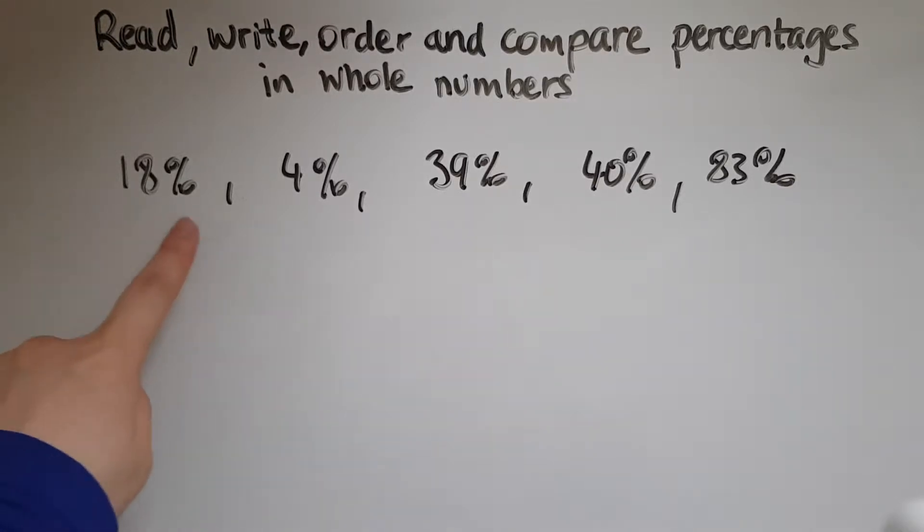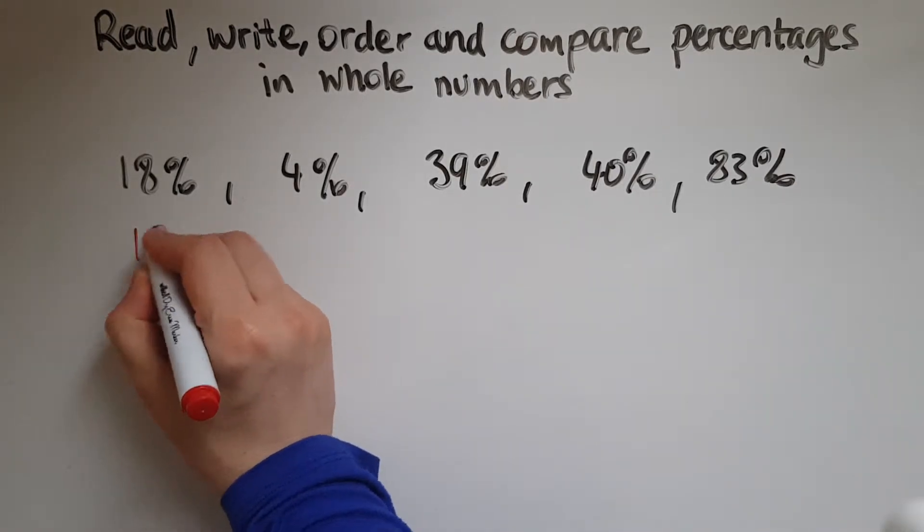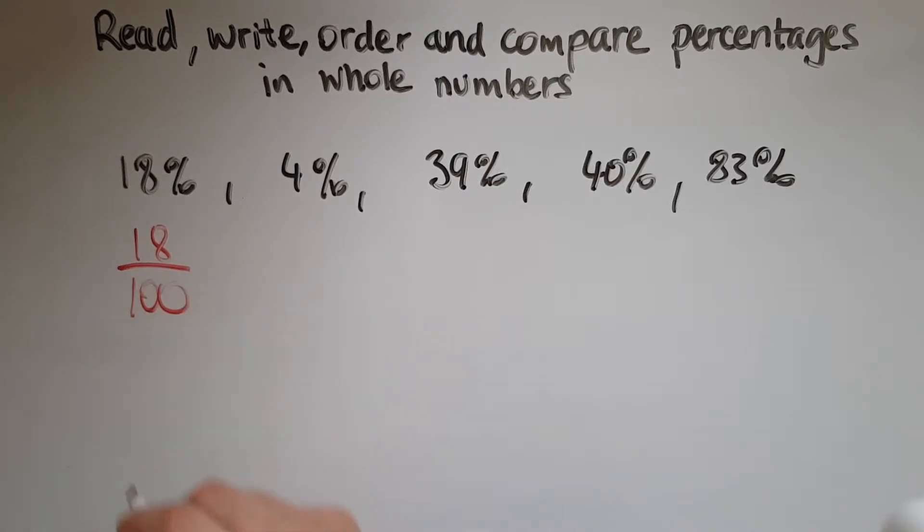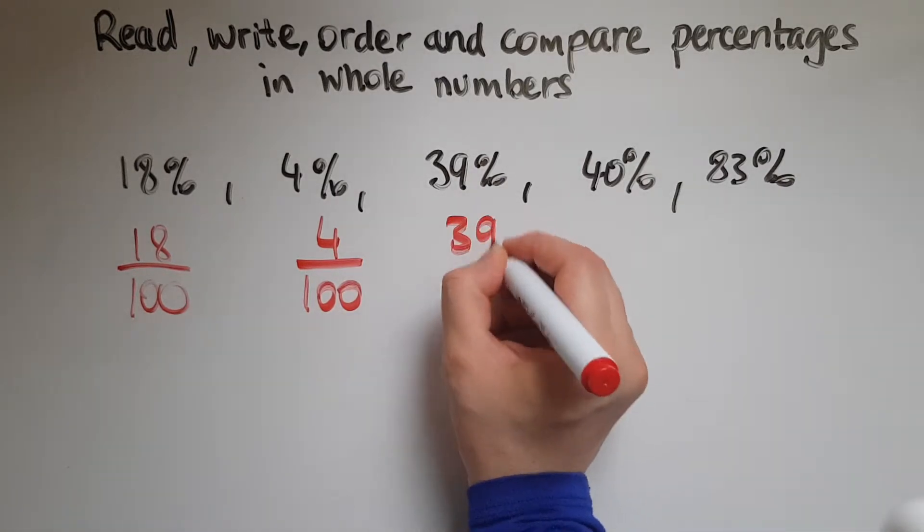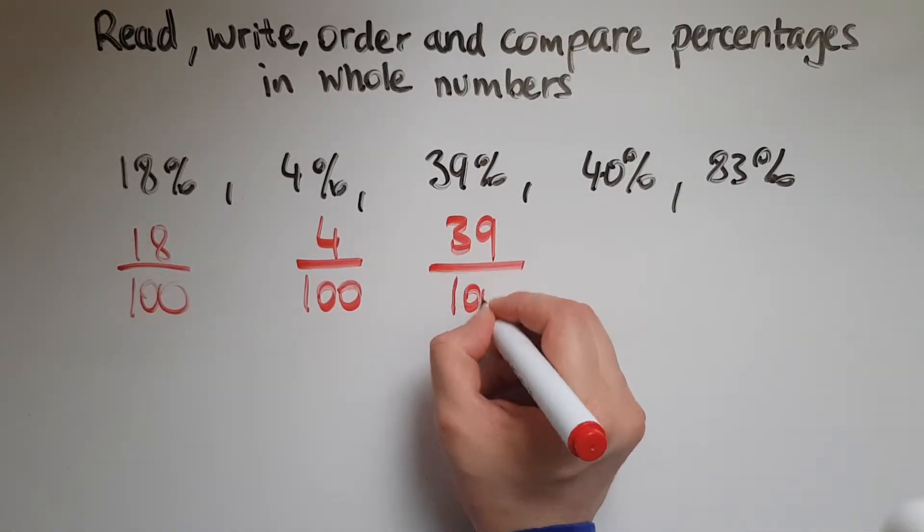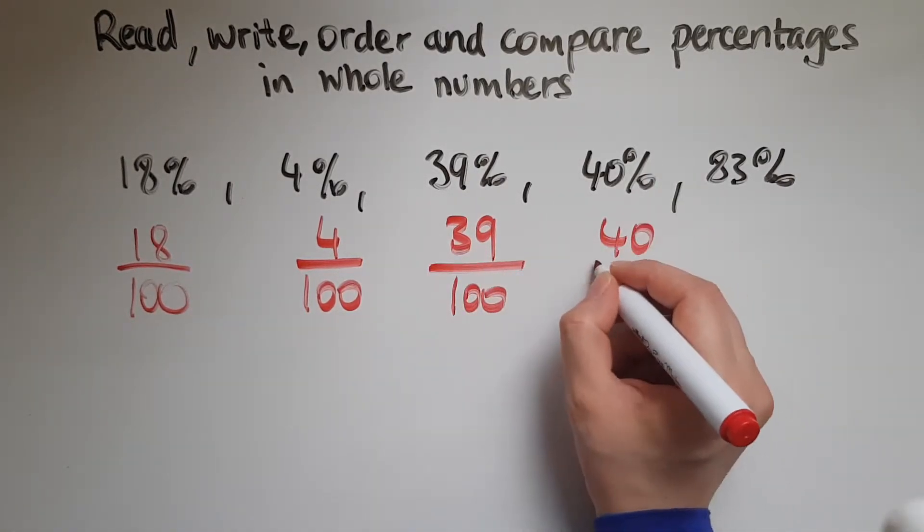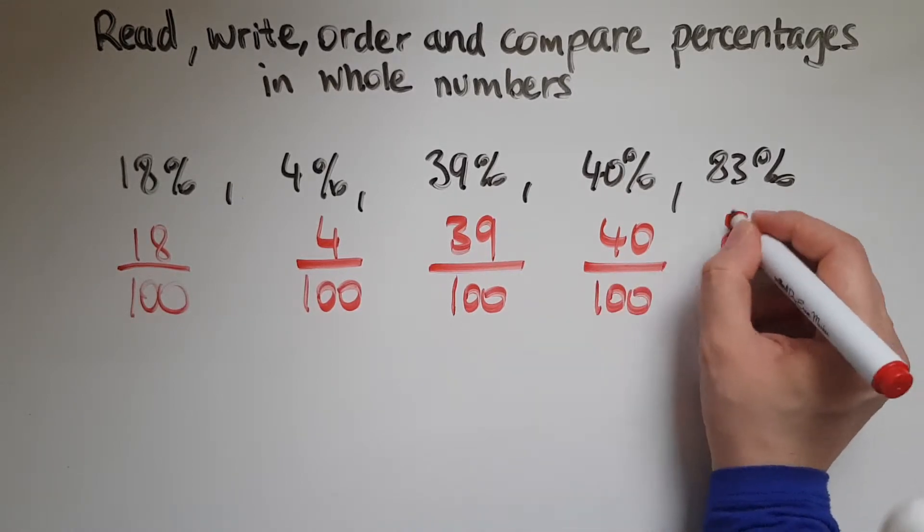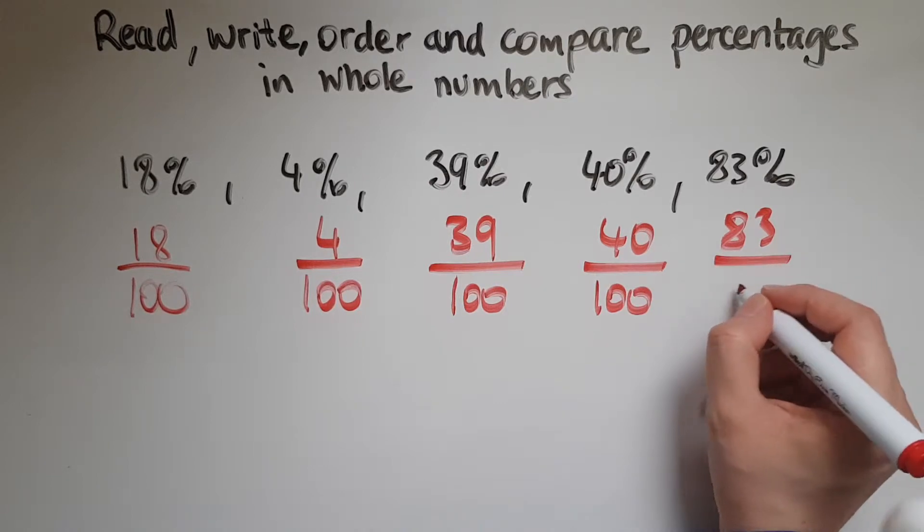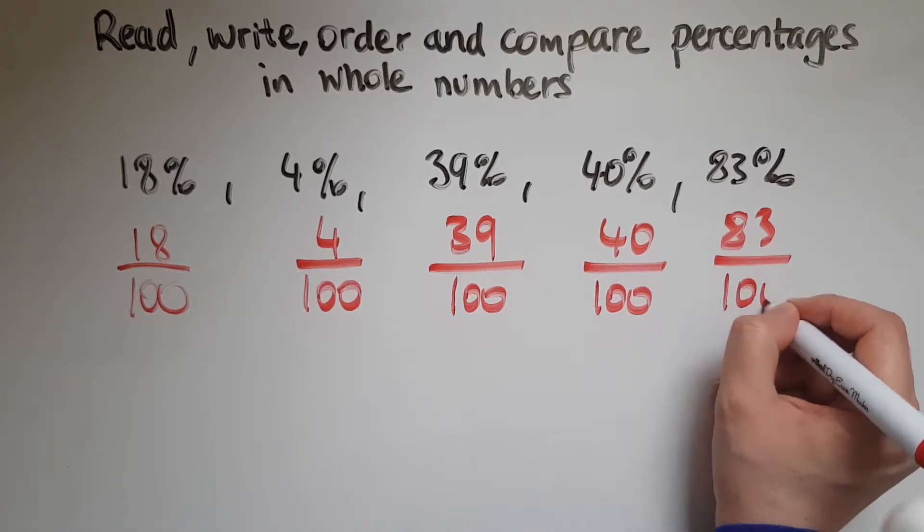So 18 percent means 18 out of 100. 4 percent means 4 out of 100. 39 percent means 39 out of 100. 40 percent means 40 out of 100. And 83 percent means 83 out of 100.